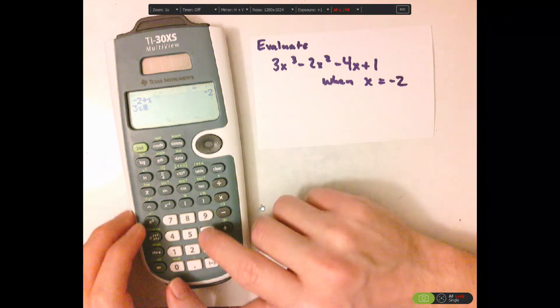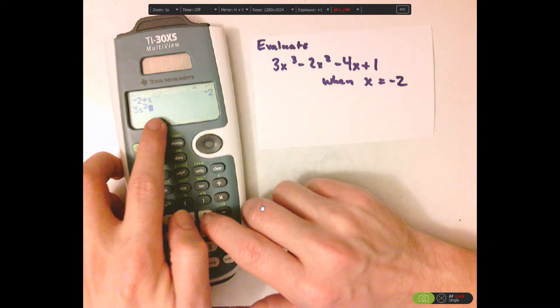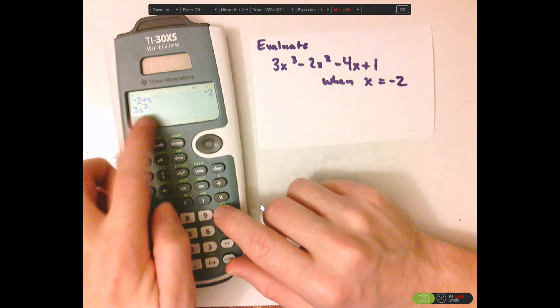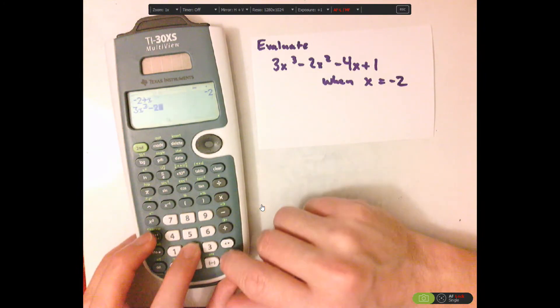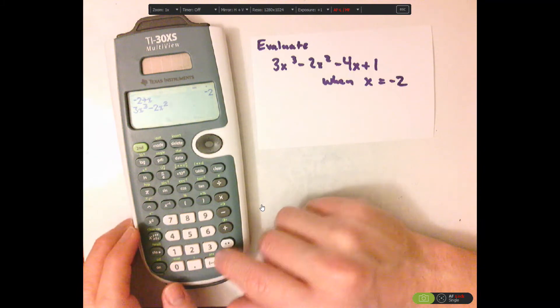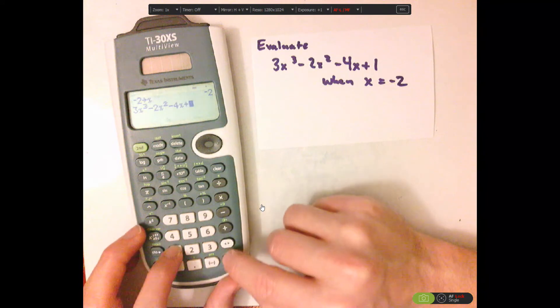So 3x raised to the third power. I have mine in math print, and I just use the arrow keys to navigate. Okay, minus 2x squared minus 4x plus 1.